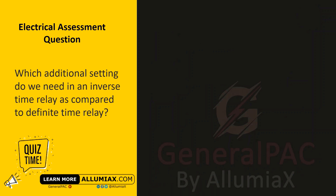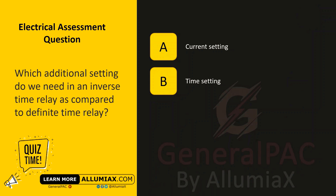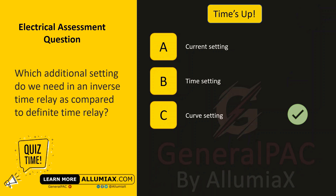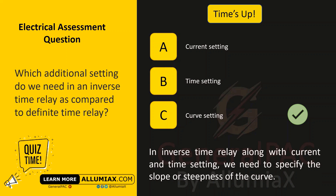Which additional setting do we need in an inverse time relay as compared to a definite time relay? A: current setting, B: time setting, C: curve setting. The answer is C — curve setting. In an inverse time relay, along with current and time settings, we need to specify the slope or steepness of the curve.